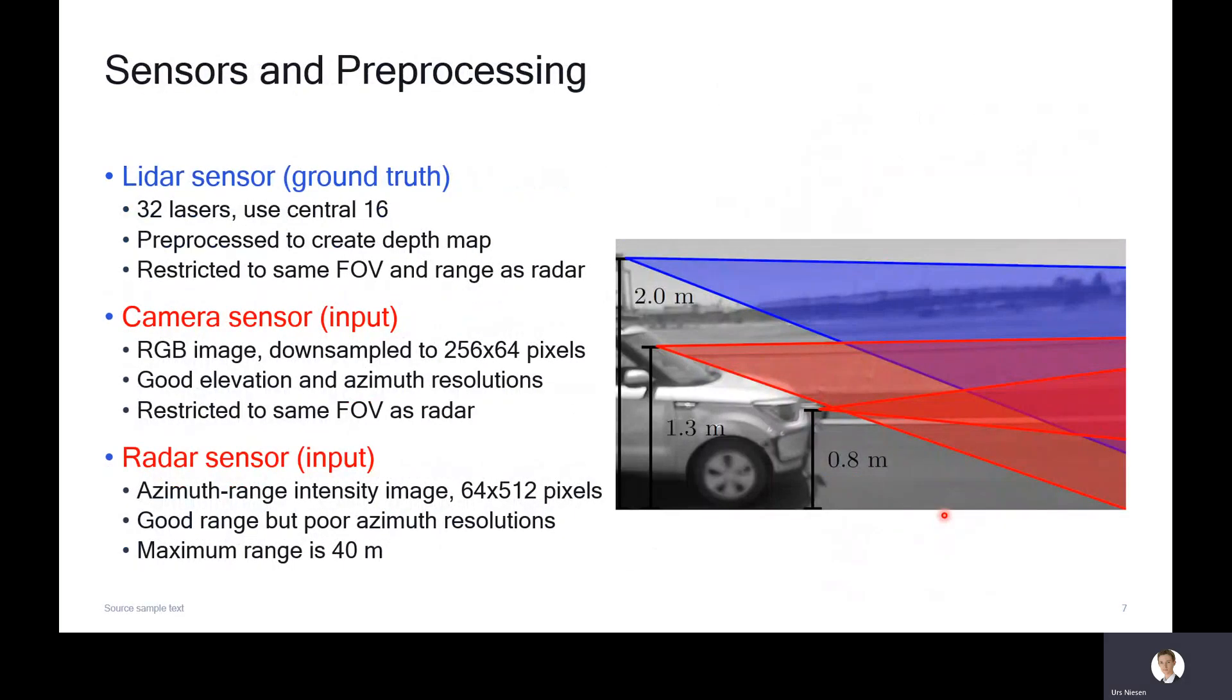Let me talk more specifically about the sensors we're using and the configuration. We have a LiDAR sensor on top that we use for ground truth only, not as input to our system. We have a camera mounted here and a radar mounted there. We preprocess them so that they have similar fields of view and we downsample them so that their resolutions are more similar in style.